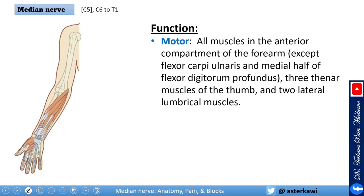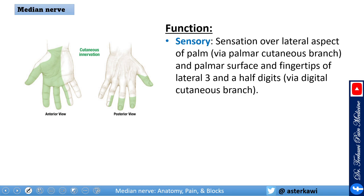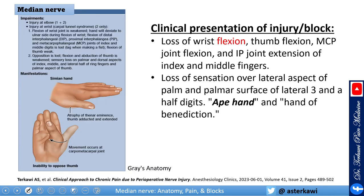The median nerve is motor to all muscles of the anterior compartment of the forearm except the flexor carpi ulnaris and the medial half of the flexor digitorum profundus, plus the thenar muscles of the thumb and two lateral lumbrical muscles. Sensory coverage is over the lateral aspect of the palm — mainly palm sensation — and the tips and fingernails of the first three and a half fingers.